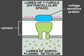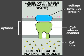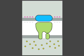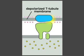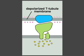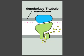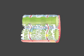A voltage-sensitive protein in these membranes opens a calcium release channel in the adjacent sarcoplasmic reticulum, which is the major calcium store in muscle cells, thereby releasing a burst of calcium ions all throughout the cytosol of the cell.